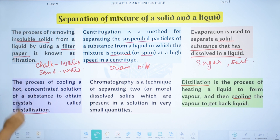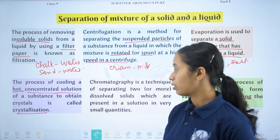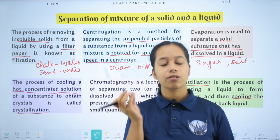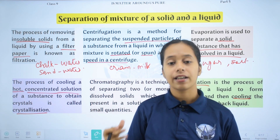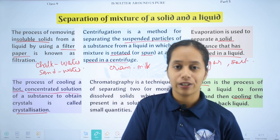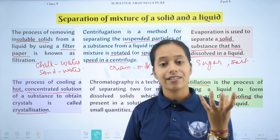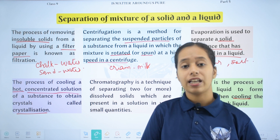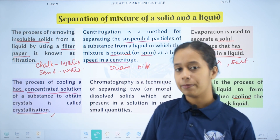Crystallization: the process of cooling a hot concentrated solution of a substance to obtain crystals is called crystallization. We heat the solution, most of the liquid part evaporates, and then we cool the solution. This heating and cooling process gives rise to crystals. For example, we can purify copper sulfate using the method of crystallization.